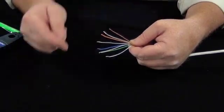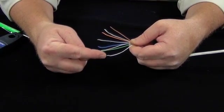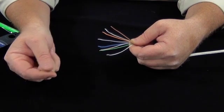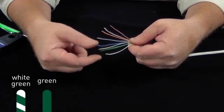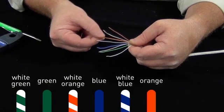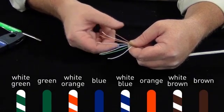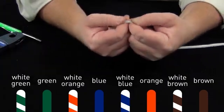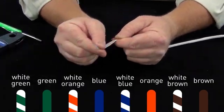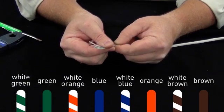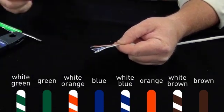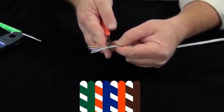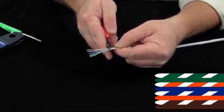Next, flare the cable in the right order following the T568A color standard: white-green, green, white-orange, blue, white-blue, orange, white-brown, brown. Use your thumbs and index fingers to create a ribbon cable, like so, and then cut the cable on a slight angle using your wire cutters.